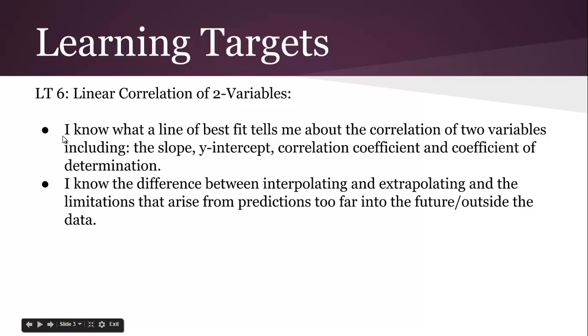So learning targets are: you have to know what the line of best fit tells you about correlation. Slope, y-intercept are things we've done before, but the correlation coefficient and coefficient of determination are new. Do you know the difference between interpolating, extrapolating, and the limitations that arise from those predictions?